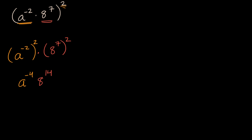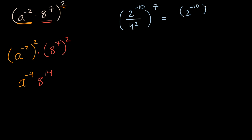Let's do one more example where we are dealing with quotients. So let's say we have two to the negative ten divided by four squared, and we're going to raise all of that to the seventh power. This is equivalent to two to the negative ten raised to the seventh power, over four squared raised to the seventh power. If you have a quotient of two things and you're raising it to some power, that's the same thing as the numerator raised to that power divided by the denominator raised to that power.